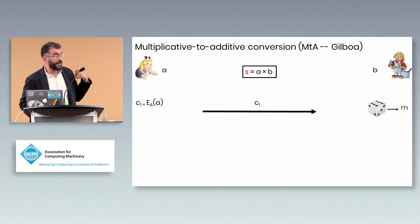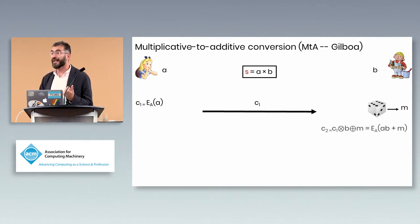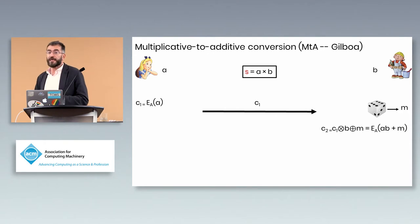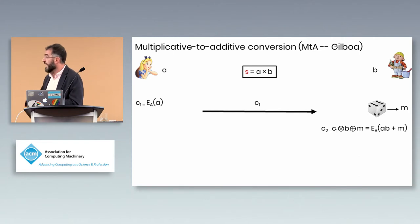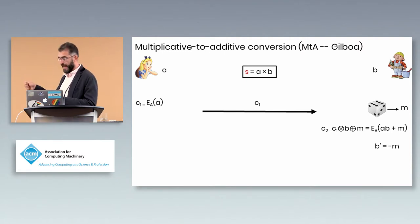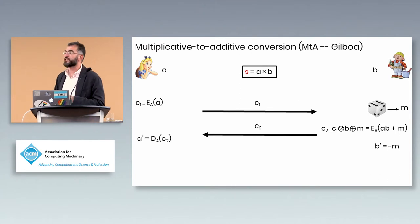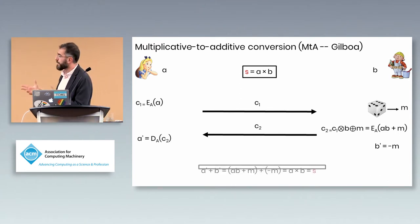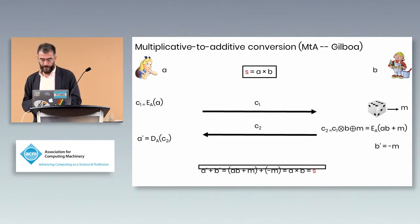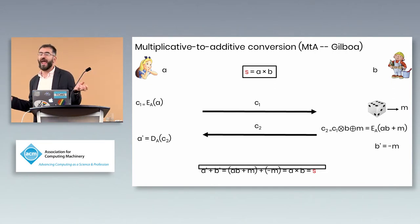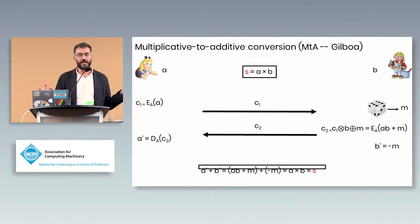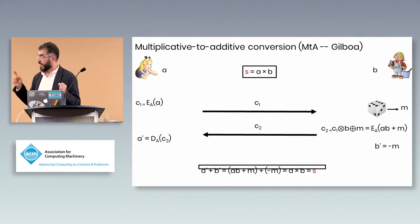Alice encrypts her multiplicative share a under Paillier and sends it to Bob. Bob picks a random number m and sends back an encryption of (ab + m), which he can compute using Paillier's additive homomorphism — multiplying by scalar b and adding scalar m. Bob's share becomes −m and Alice's share is whatever she decrypts, call it a'. Together, a' and −m sum to s = ab.